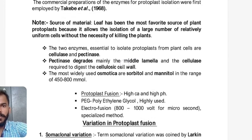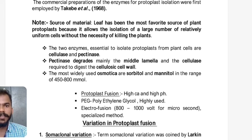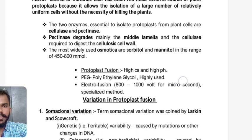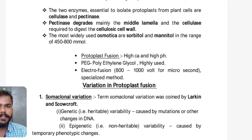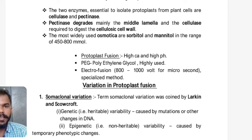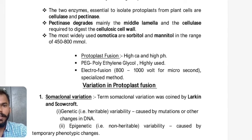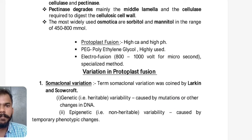The leaf has been the most favored source of plant protoplast as it allows isolation of a large number of relatively uniform cells without killing the plant. The two essential enzymes to isolate protoplast are cellulases and pectinases. Pectinase degrades mainly the middle lamella, composed of calcium and magnesium pectate; cellulase digests the cellulosic cell wall. The most widely used osmoticants are sorbitol and mannitol at a concentration of 450 to 800 millimolar.